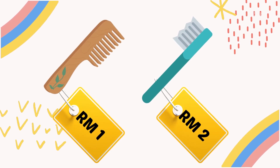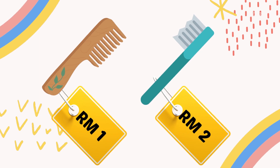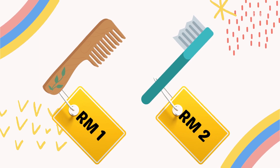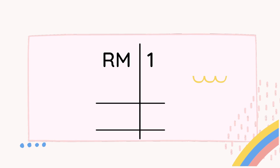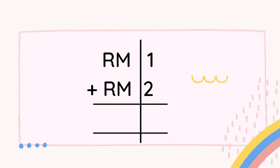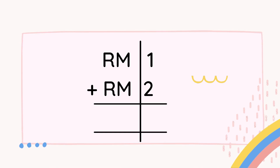Now let's move to the next example. Look at the picture — we have a comb and a toothbrush. The comb price is RM1 and the toothbrush price is RM2. We need to do addition. This is how you write it: write RM1 on the top and RM2 at the bottom, and we draw the lines. We can draw the vertical line to separate between RM and the numbers 1 and 2.